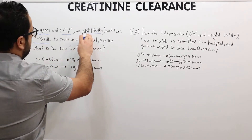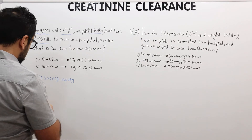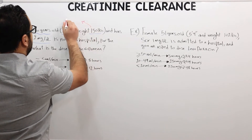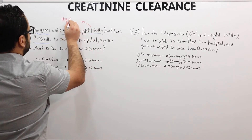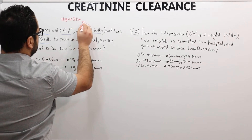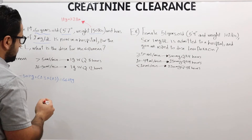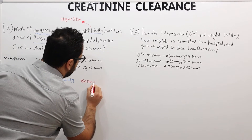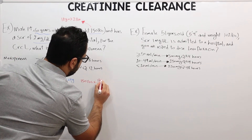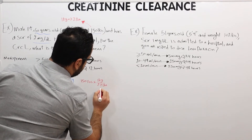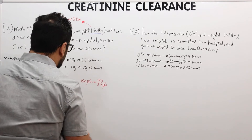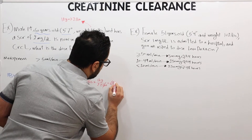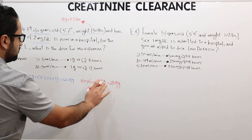Now let's convert the pounds to kilograms to get the total body weight. The conversion factor is 1 kilogram equals 2.2 pounds. So we have 150 pounds multiplied by (1 kg / 2.2 lbs). Dividing 150 by 2.2 gives us 68.1 kilograms — this is the total body weight.